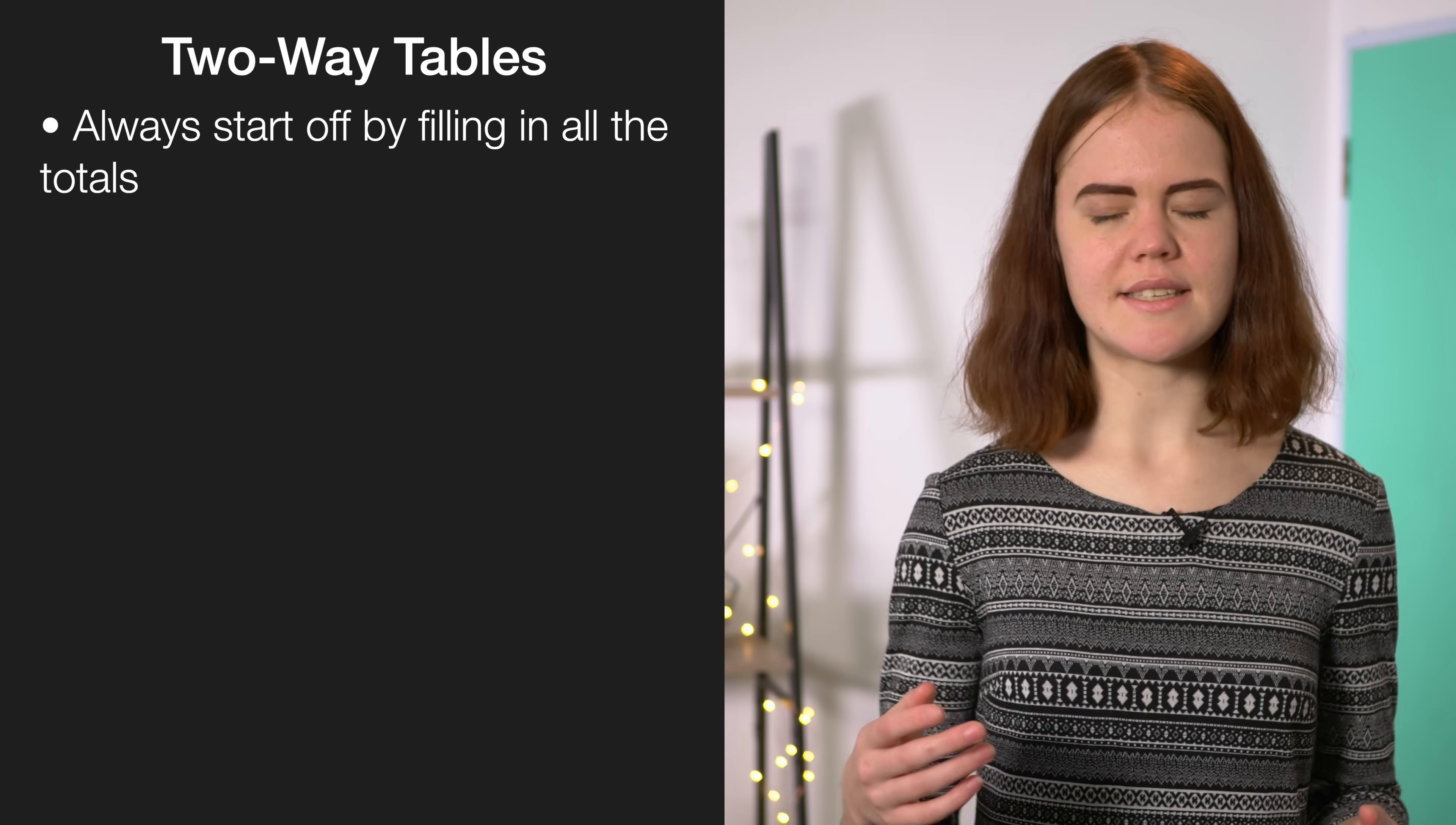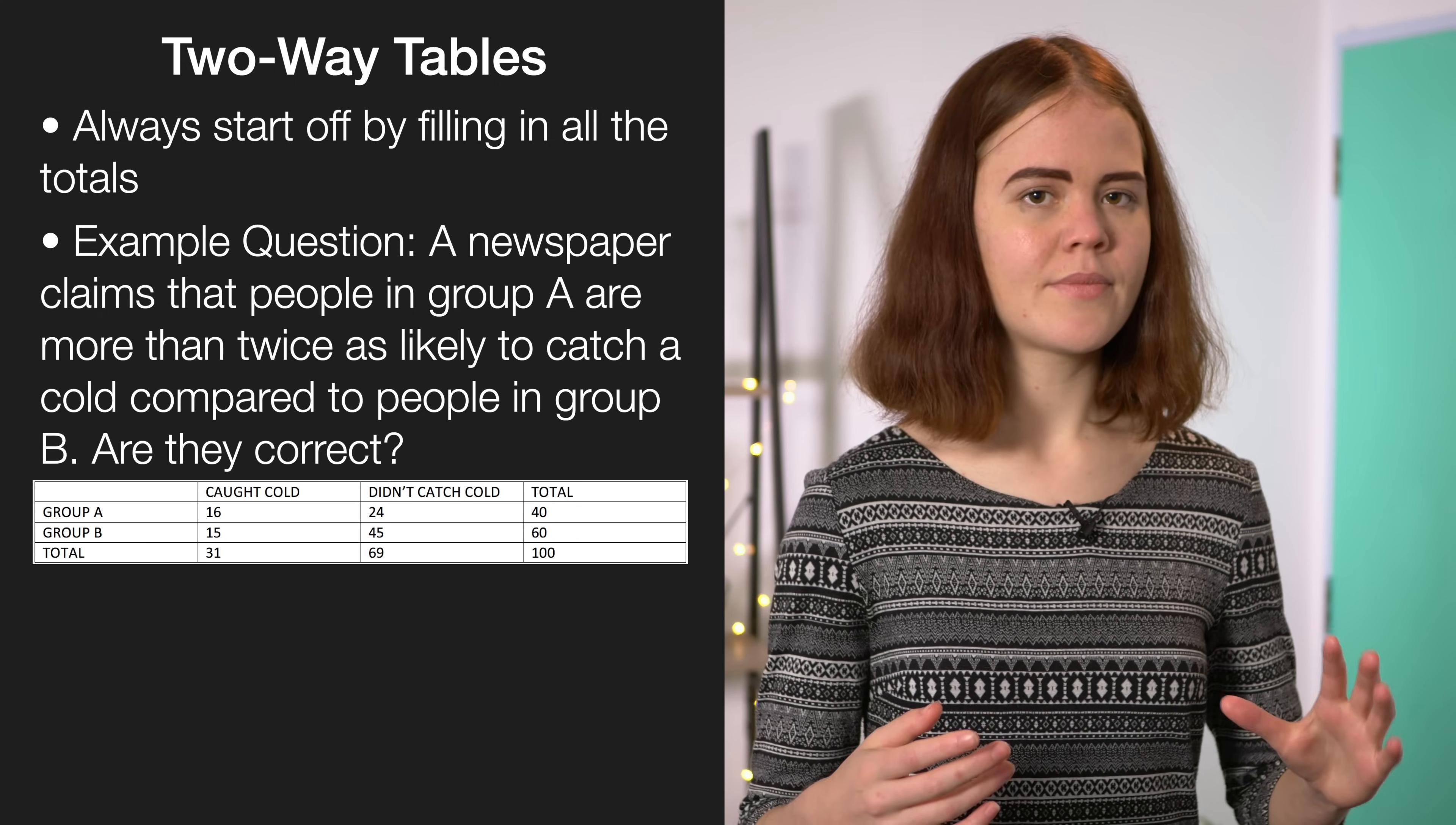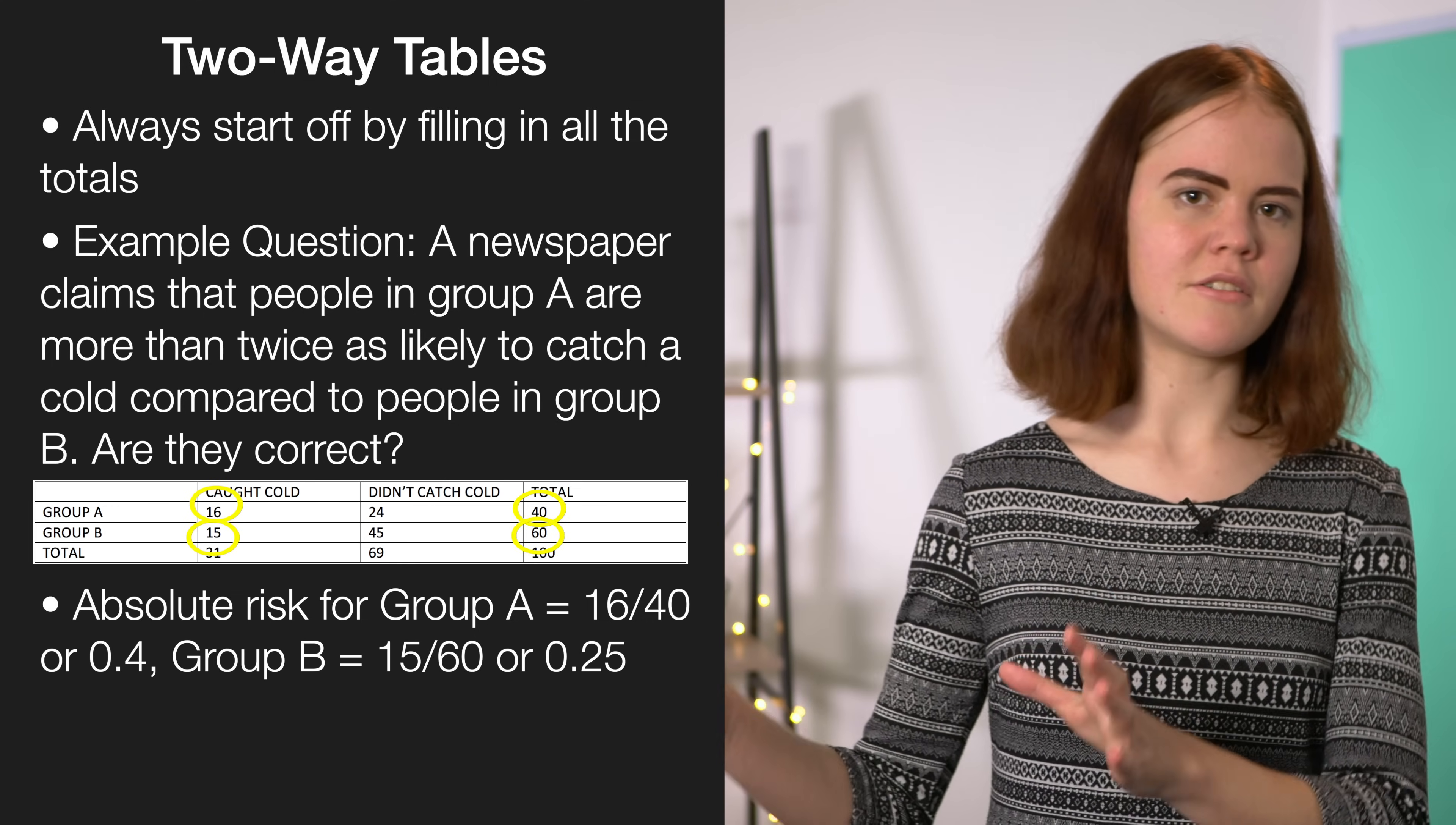They're usually phrased as a claim, so let's say the question said a newspaper states that group A is twice as likely to catch a cold as group B. So the first thing you need to do is calculate what's called the absolute risk, which is just a really fancy way of saying the probability for each group. In this particular case, the probability of group A catching a cold is 16 out of 40, which is 0.4, and the probability of group B catching a cold is 15 out of 60, which is 0.25. So those are our absolute risks.